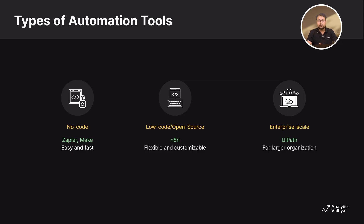Tools like Zapier are no-code tools — you don't need any expertise in programming languages to use them. Low-code tools are very similar to no-code tools, but they provide basic programming functionalities with which you can automate complex workflows. Enterprise-scale tools deploy dedicated workflows for big organizations and can handle heavier loads or volumes.